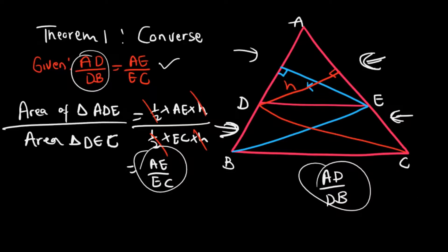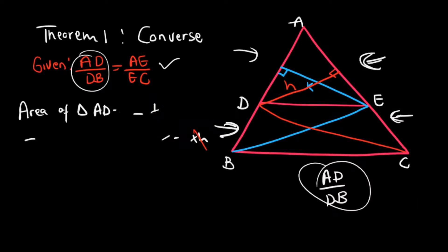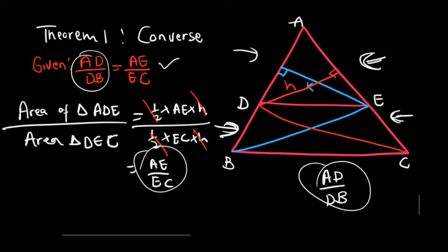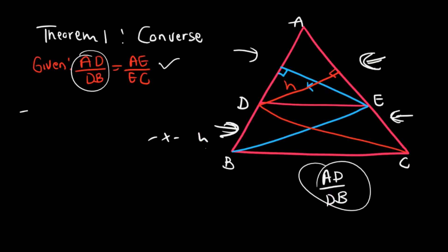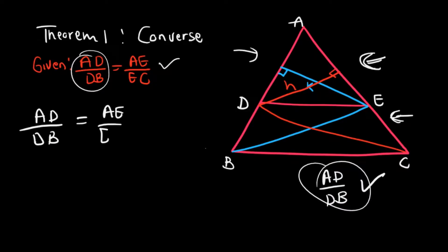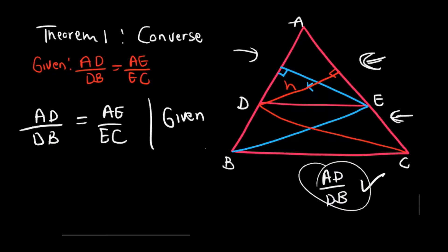We have now shown that AD over DB equals AE over EC. The reason for this step is 'given,' since we were told these ratios are equal. Remember, we are trying to prove that DE is parallel to BC.